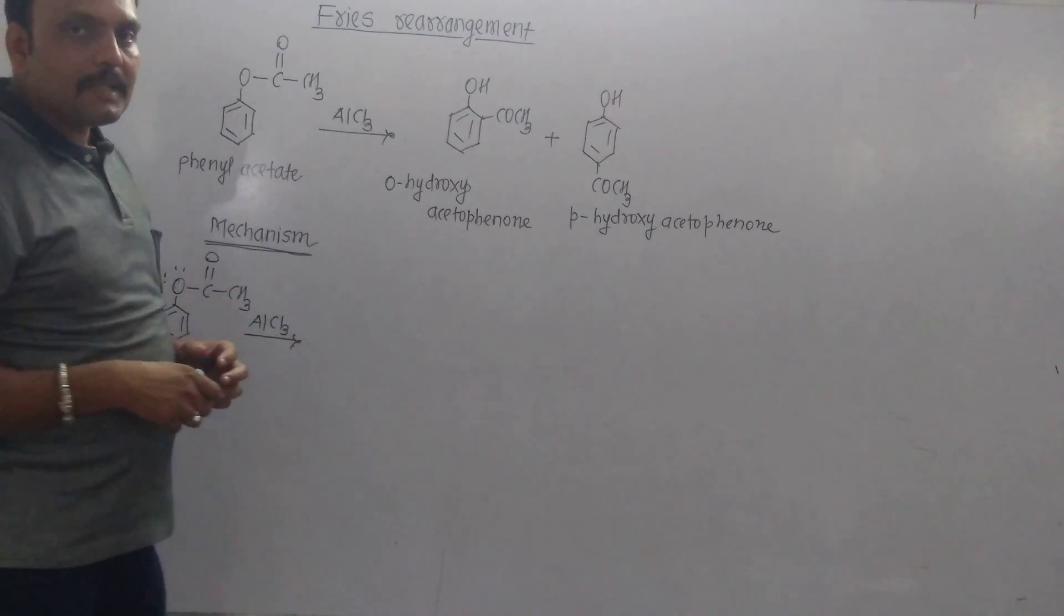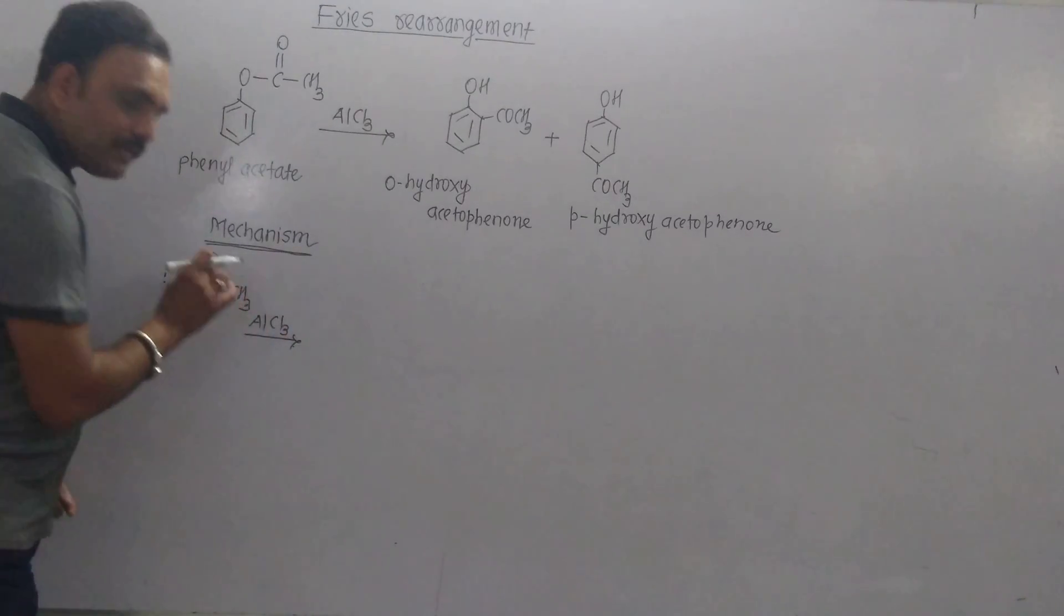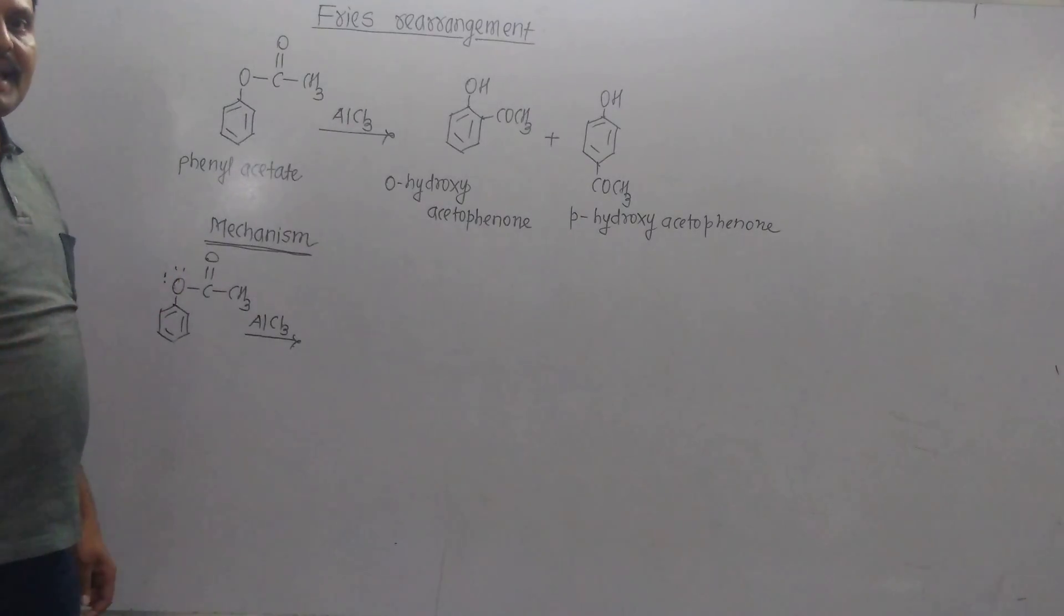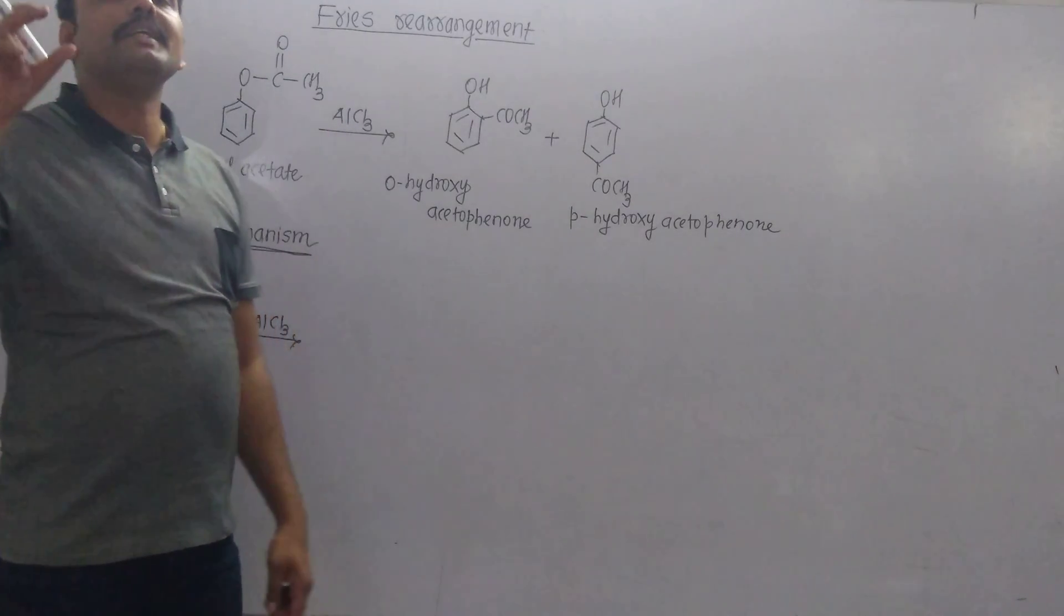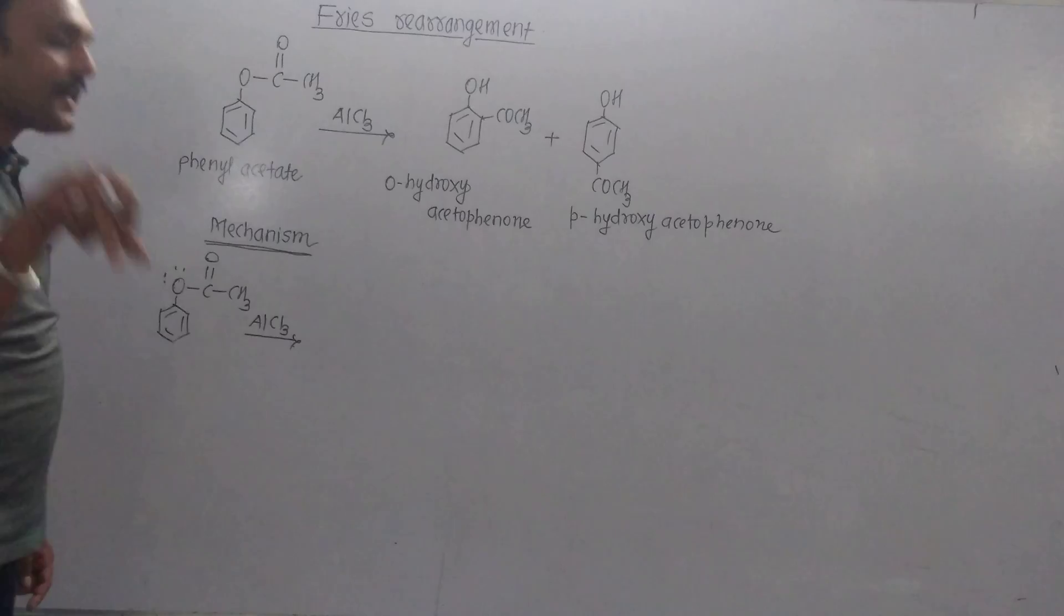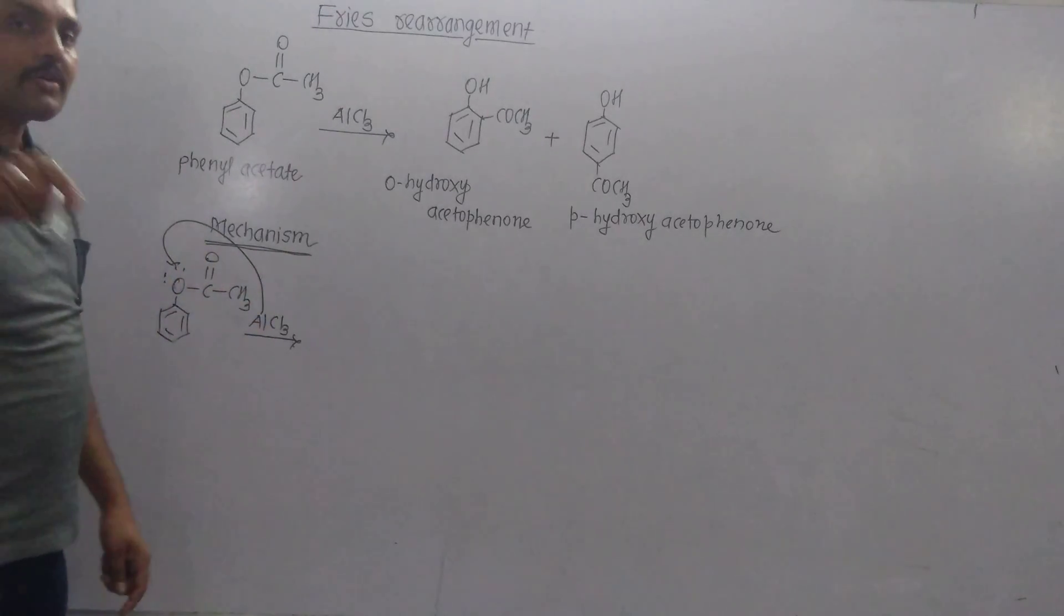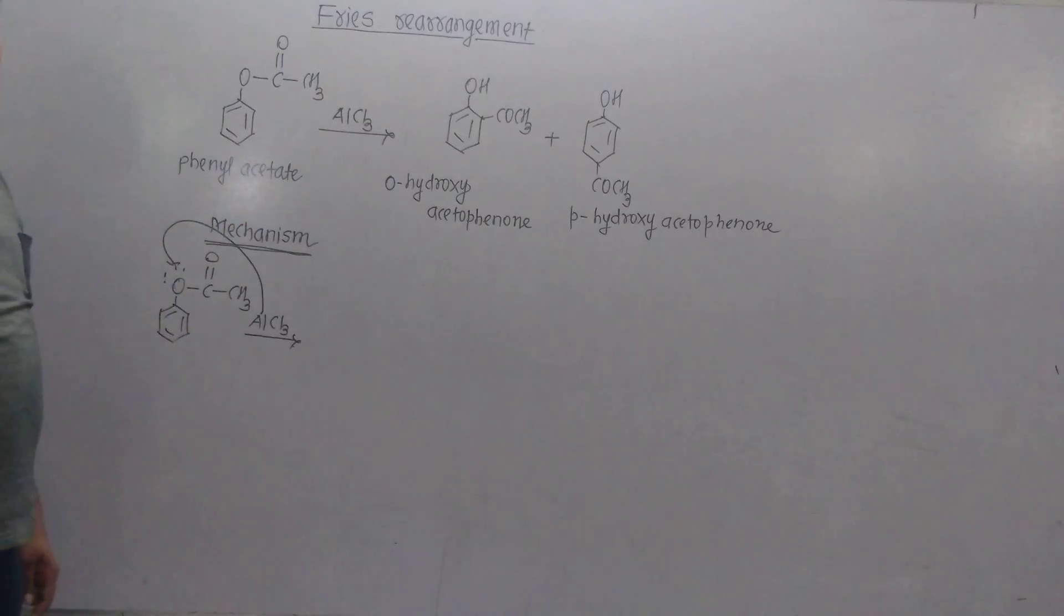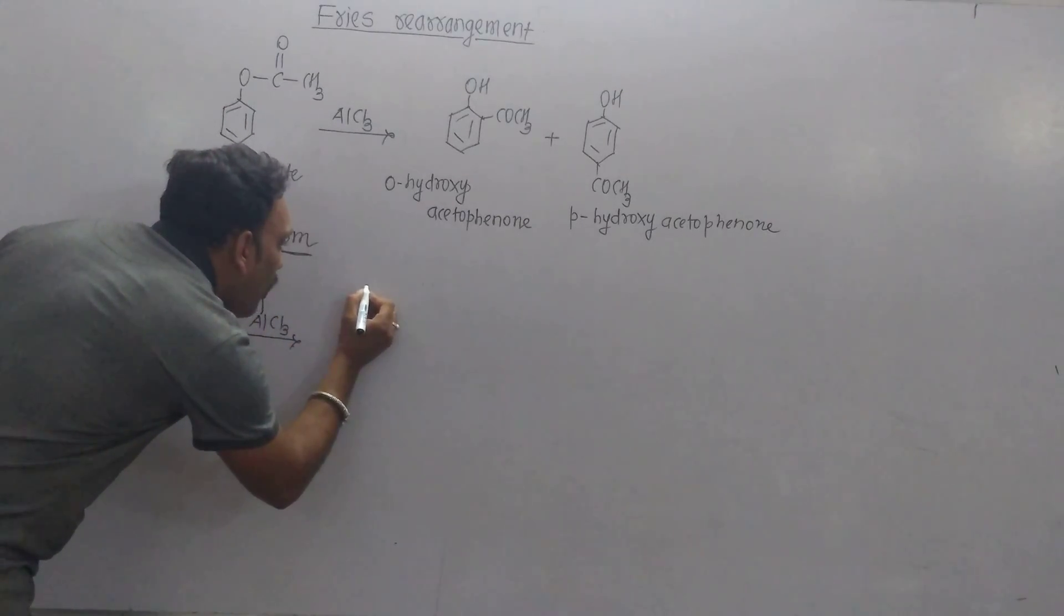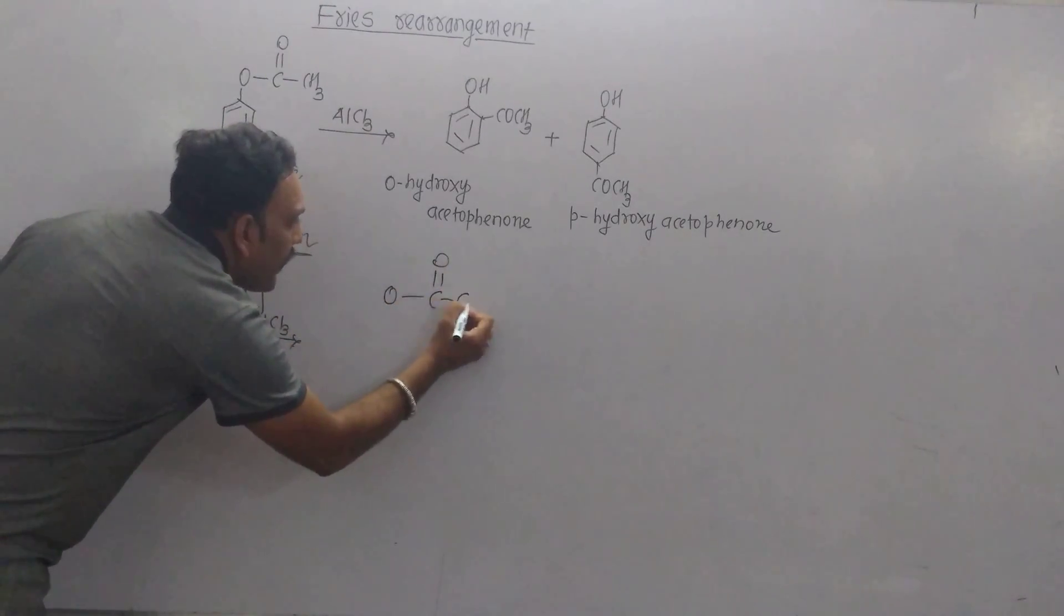As far as the mechanism of this reaction is concerned, AlCl3, being an electron-deficient molecule, is an excellent example of Lewis acids. It attacks the electron-rich oxygen. Oxygen bears a lone pair of electrons, and due to this, an intermediate is obtained.